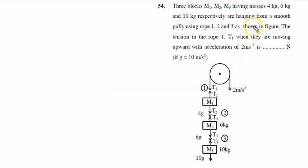Three blocks M1, M2, M3 having masses 4 kg, 6 kg, and 10 kg respectively are hanging from a smooth pulley using rope 1, 2, and 3. The tension in rope 1 is T1. When they are moving upward with acceleration of 2 meter per second square, then what is the tension?